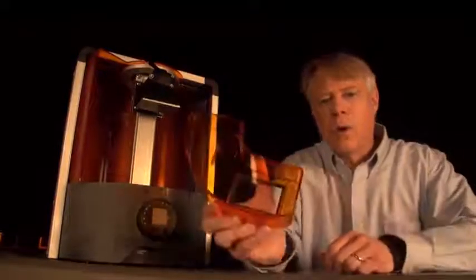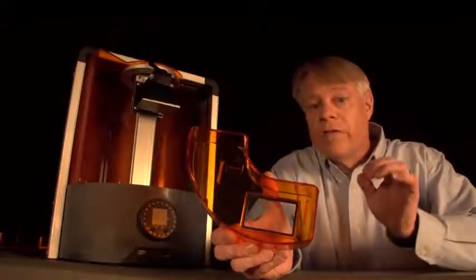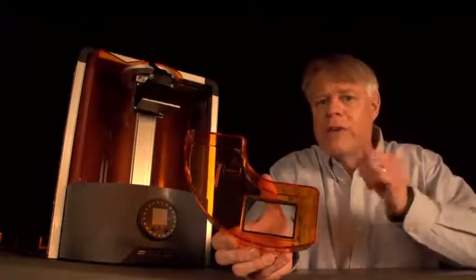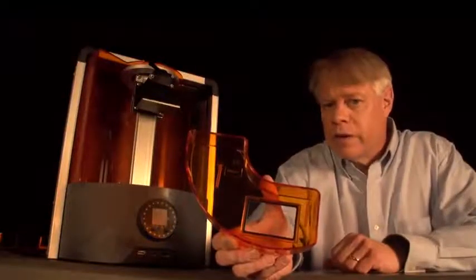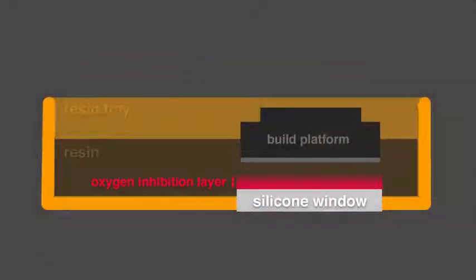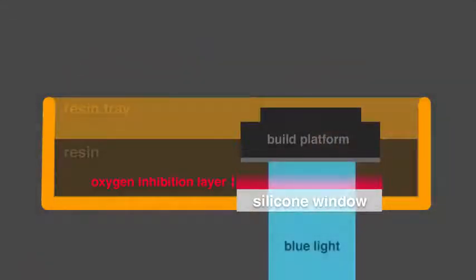Next, let's look at why the resin tray slides sideways after each layer. In a bottom-up print, the layer is built on a window. This machine would fail if the cured resin stuck to the window. Most 3D printing resins have the property that oxygen hinders the chemical reactions that cause them to solidify. To allow oxygen into the layer, this window is made from silicone, a material highly permeable to gas. Oxygen residing in the window diffuses into a thin layer of resin just above the window. This layer is 5 to 50 microns thick, but the concentration of oxygen in this layer is enough to prevent the resin curing directly on the window.